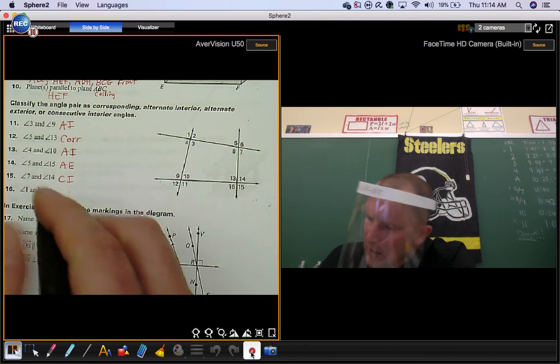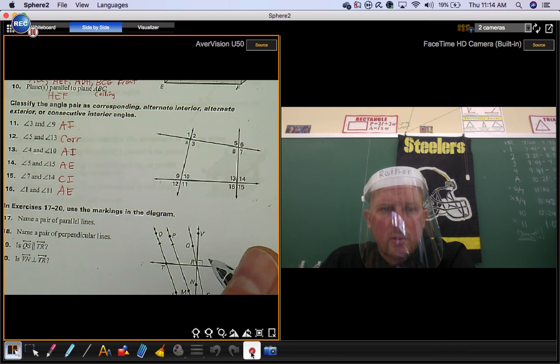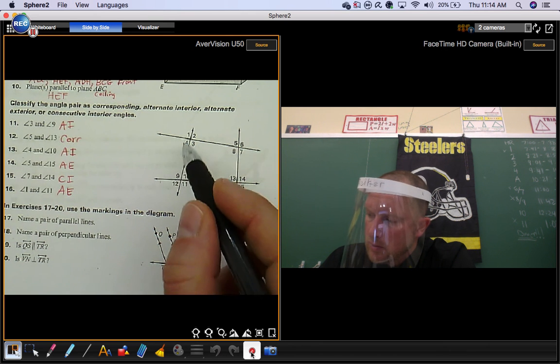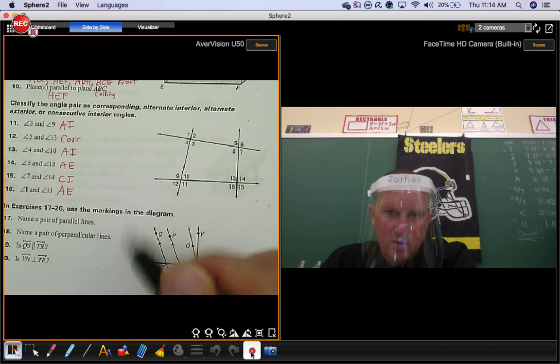Number 16, angle 1 and angle 11 are alternate exterior angles. Angle 1 is to the left. Angle 11 is to the right. They're both outside.